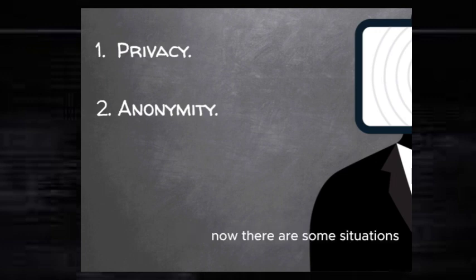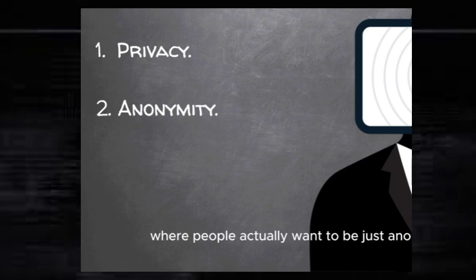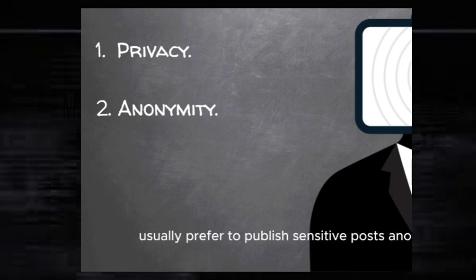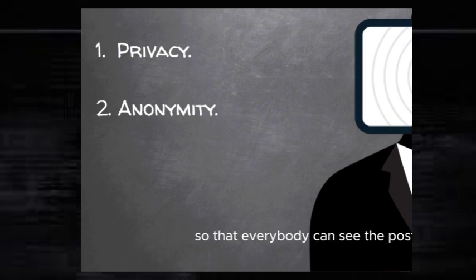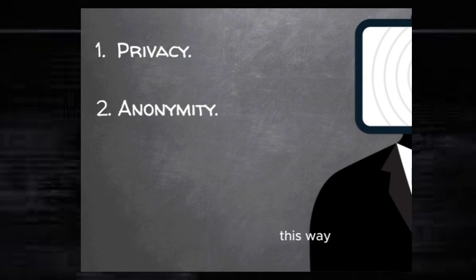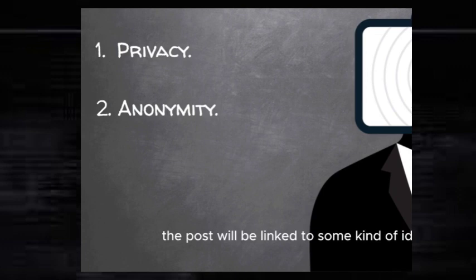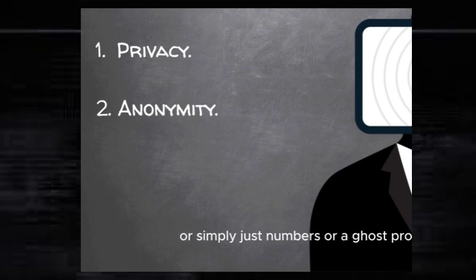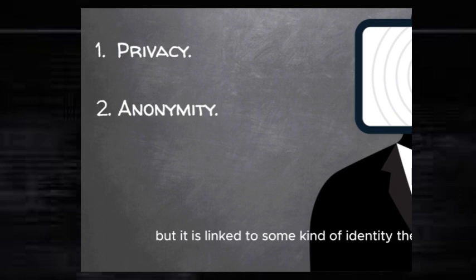There are some situations where people actually want to be just anonymous. For example, journalists usually prefer to publish sensitive posts anonymously so that everybody can see the post — it's not hidden, it's not private — but at the same time it can't be linked to their real identity. The post will be linked to some kind of identity, such as a fake name, numbers, or a ghost profile. Therefore, this is known as pseudo-anonymity.